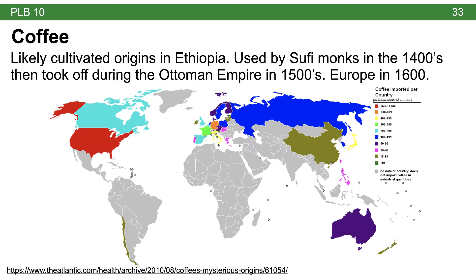Coffee has somewhat mysterious origins but was likely first cultivated in Ethiopia. There's lots of mythology around its initial domestication, but historical evidence shows Sufi monks using coffee in the 1400s and actual coffee houses appearing in the Ottoman Empire in the 1500s. By the 1600s it reached Europe, where it was initially unwelcome but later transcended its negative stereotypes to become the preferred beverage of college students everywhere.